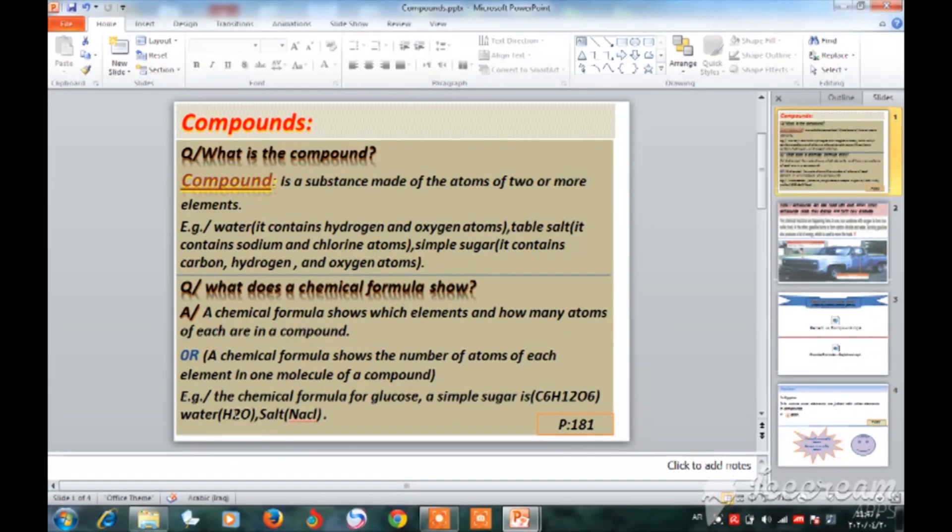Example of this question: the chemical formula for glucose or simple sugar is C6H12O6.